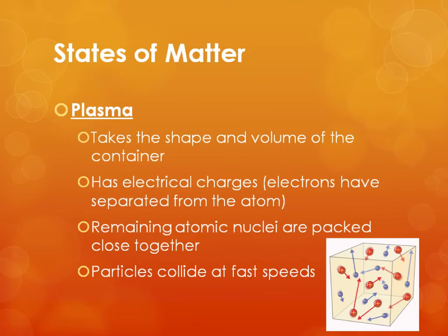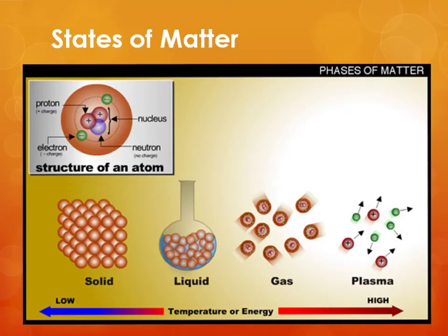What happens is that the remaining atomic nuclei — remember, electrons are spinning around the nucleus, so when they're taken away, all we have left is the nucleus made up of protons and neutrons — are packed really close together. This is a really high pressure situation, and because they're packed close together, they are colliding at really fast speeds with a lot of energy. Examples of plasma would be fire or lightning. From left to right in the diagram, we end up with solid at really low energy, liquid at moderate energy, then gas, and finally plasma, which is like superheated gas.